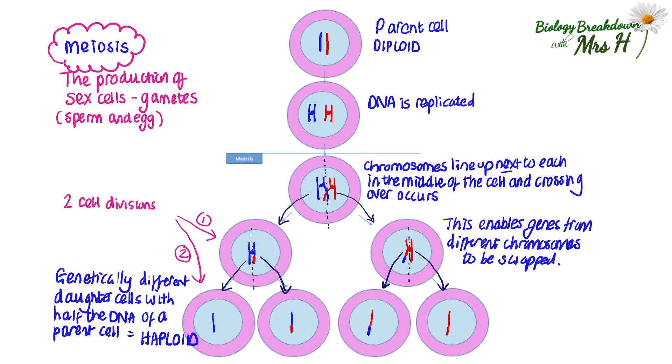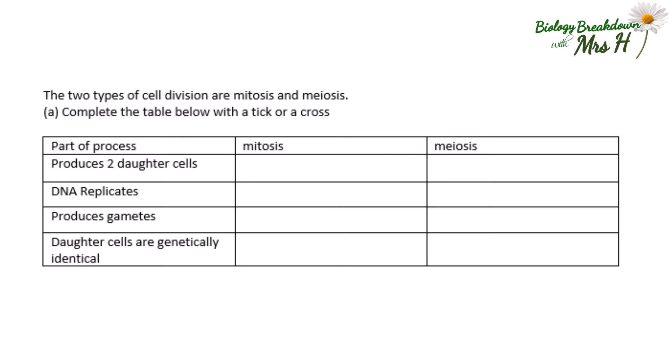Let's have a go at some practice questions. The two types of cell division are mitosis and meiosis — complete the table below with a tick or a cross. Produces two daughter cells: mitosis yes, meiosis no. DNA replicates: yes in mitosis and yes in meiosis. Produces gametes: no in mitosis and yes in meiosis. Daughter cells are genetically identical: yes in mitosis, no in meiosis.